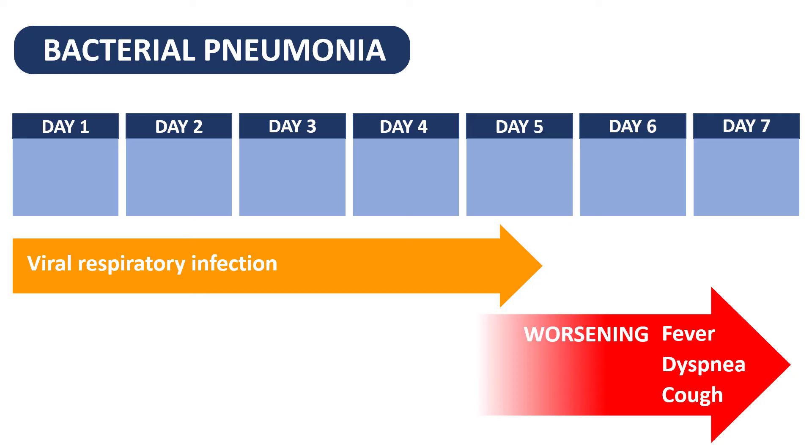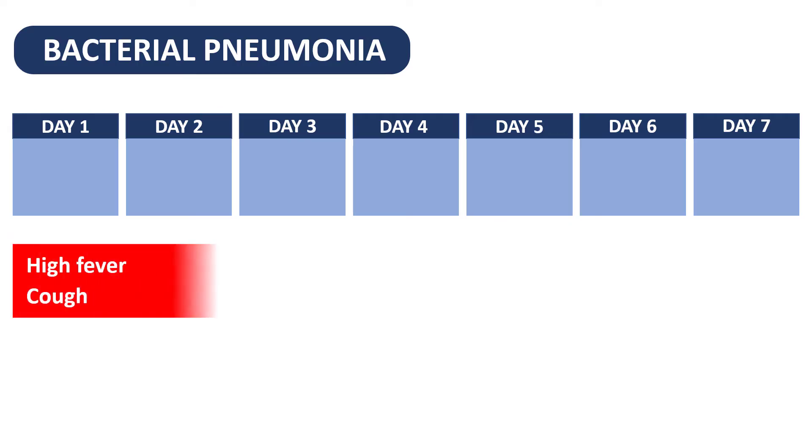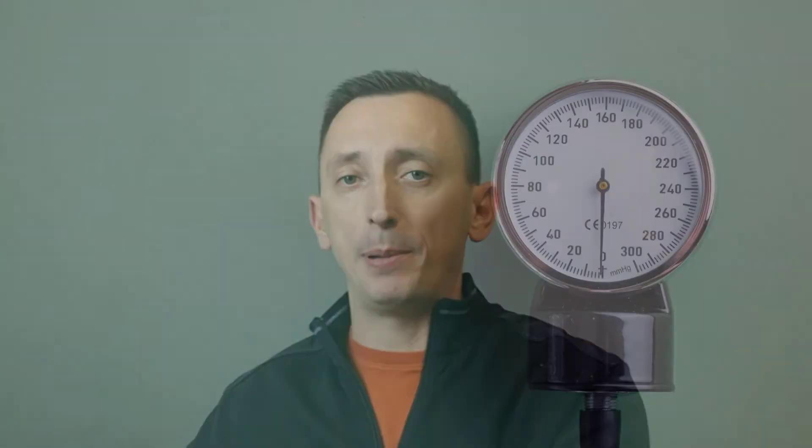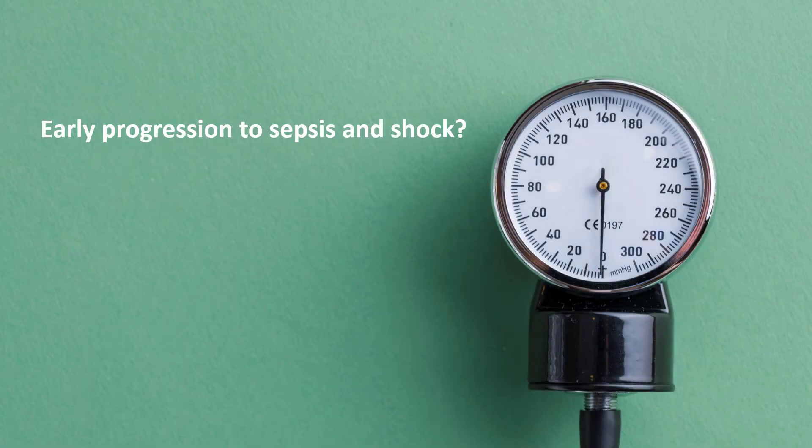In addition to appearing as a complication of a preceding viral respiratory tract infection, bacterial pneumonia can also present with rapid onset and rapid progression to sepsis. Notice the hypotension here — you will not see that in COVID. Even patients with the most severe COVID pneumonia are usually able to maintain normal blood pressure for a very long time. This rapid progression with signs of sepsis and septic shock is typical for bacterial pneumonia.